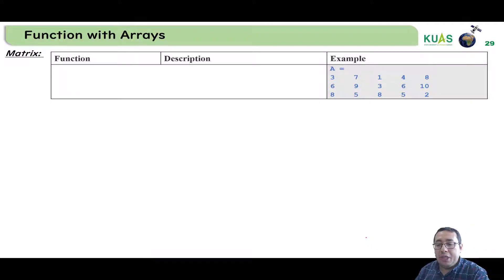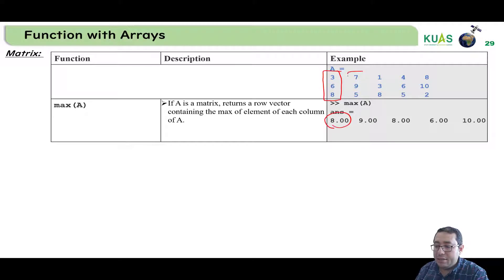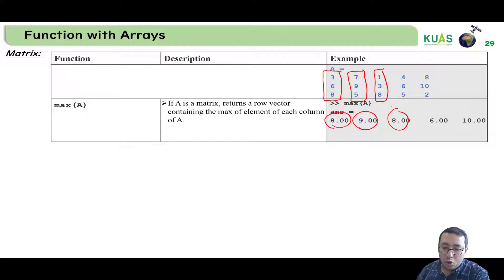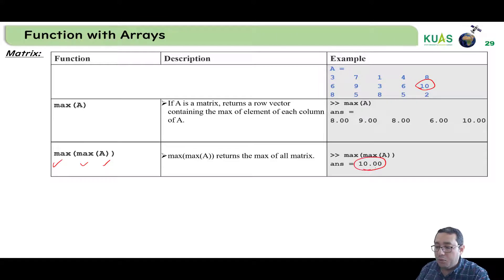How about estimating the maximum for matrix A? max(A) will estimate the maximum number for each column. For example, from 2, 3, 6, 8 the maximum is 8; from 7, 9, 2 the maximum is 9; from 1, 3, 8 the maximum is 8, and so on. If we need the maximum for the whole matrix, we write max(max(A)), and if we check, the maximum number is 10.